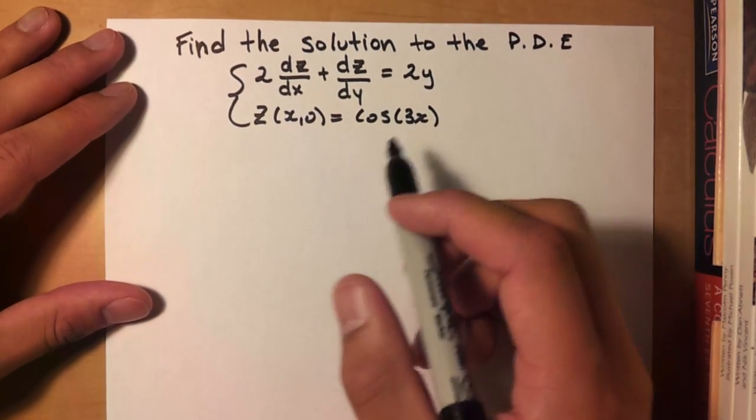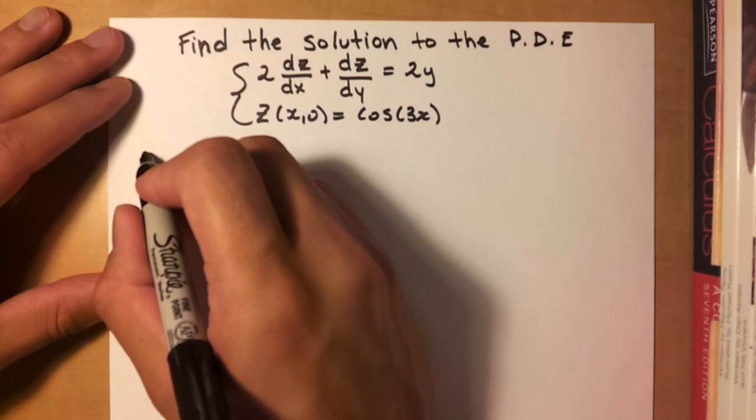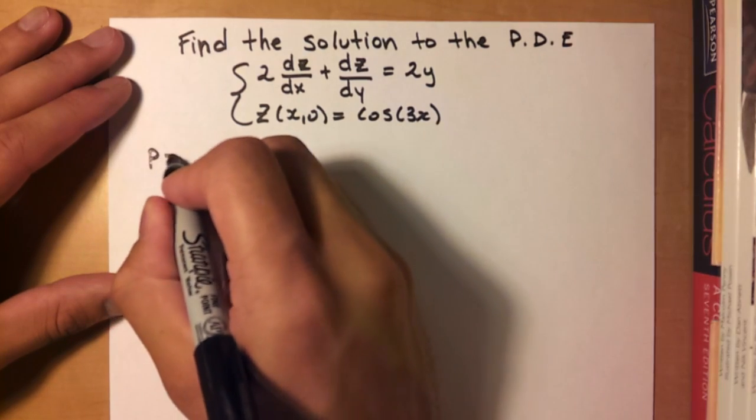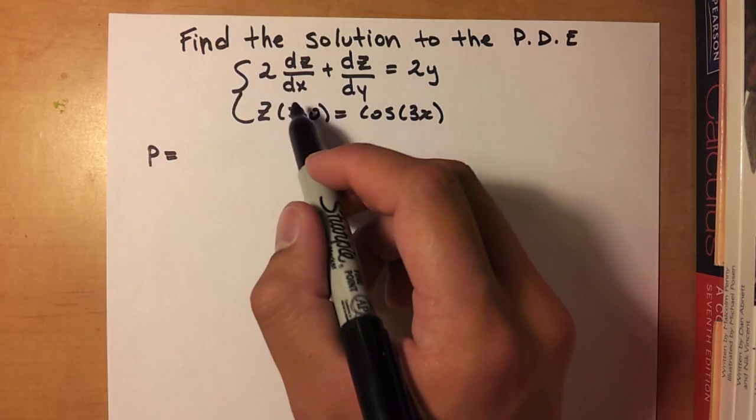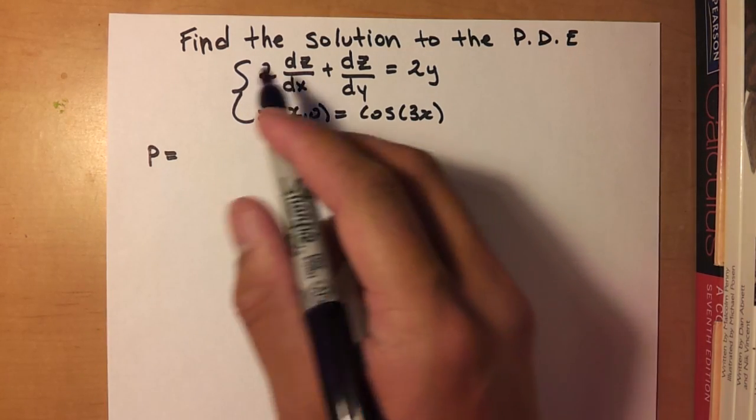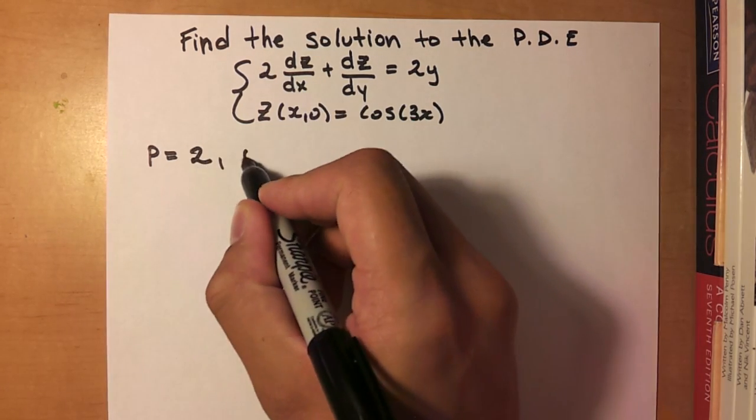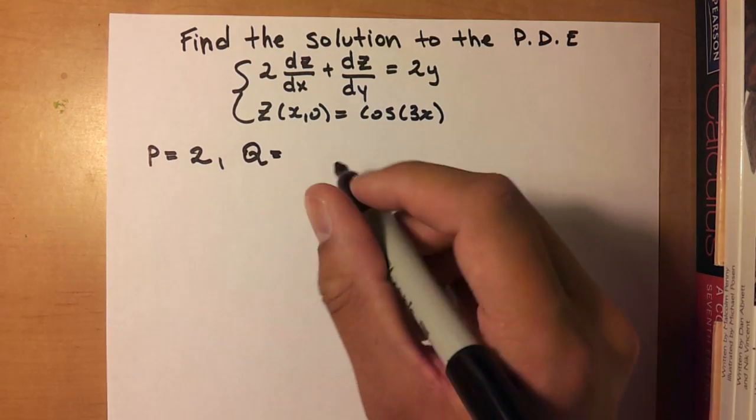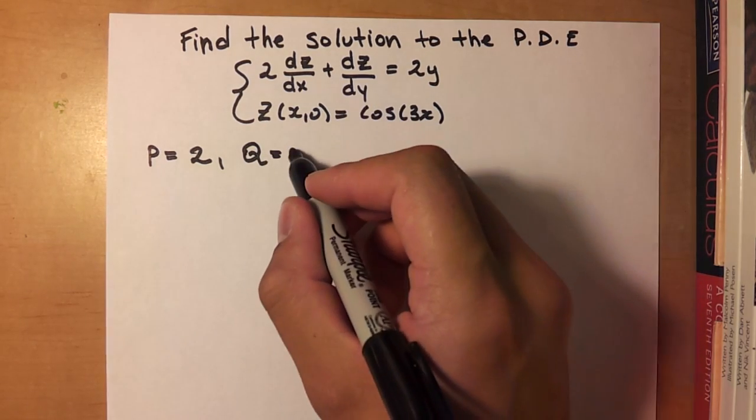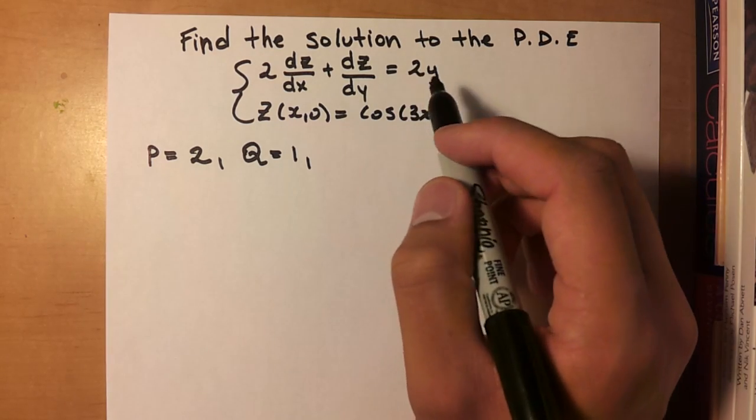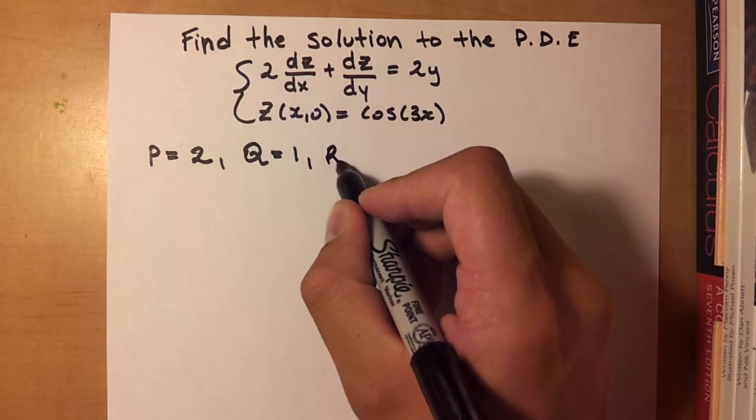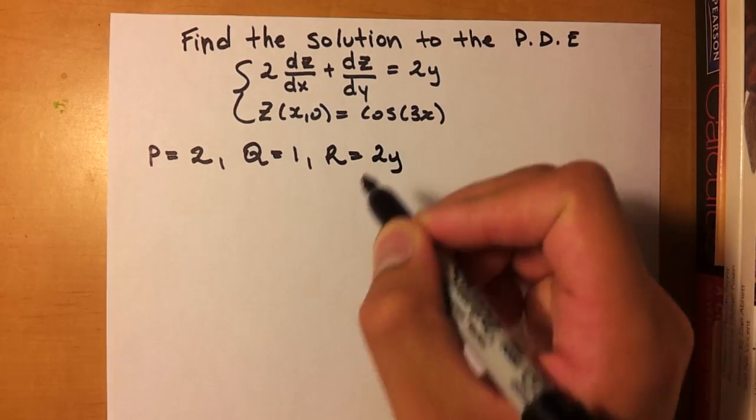Alright, so the first thing we need to do is we need to identify what P is. So our P in this situation is whatever corresponds to dx, so that's just 2. Whatever our Q is, is whatever corresponds to the dy, which is just 1. And whatever's left over, on the other side of the equation, is just R, which is 2y.